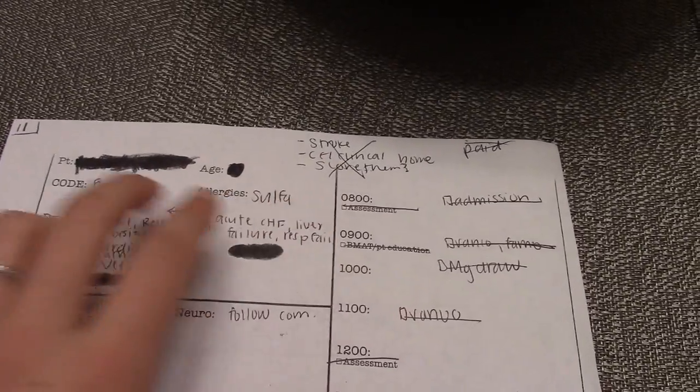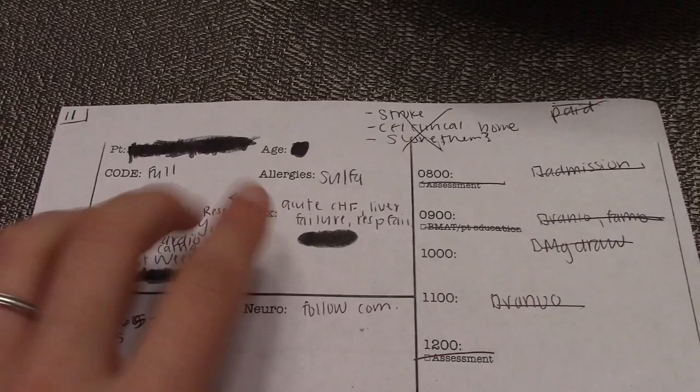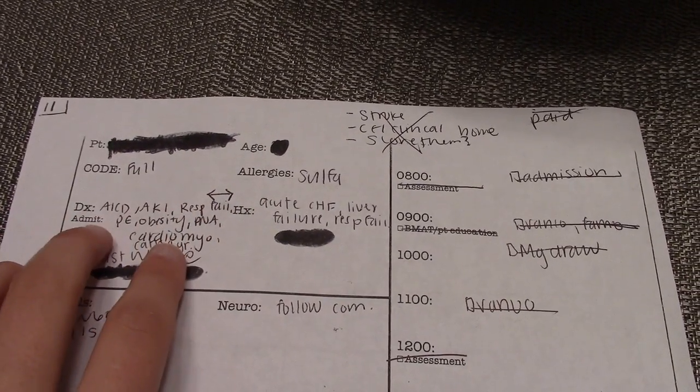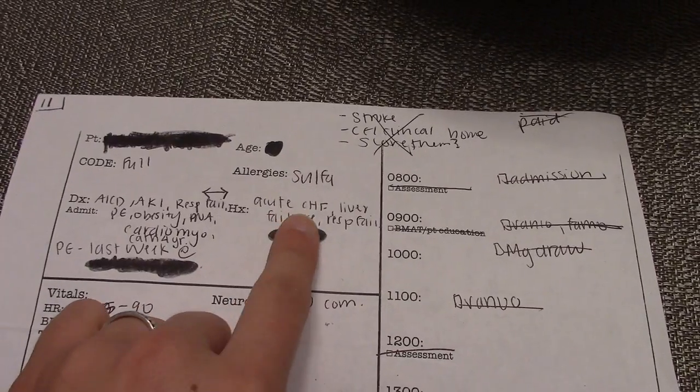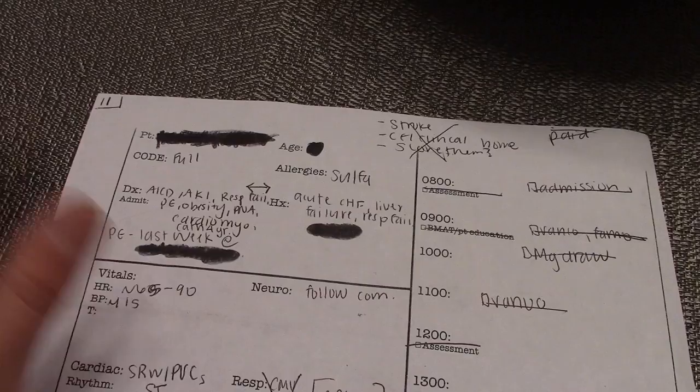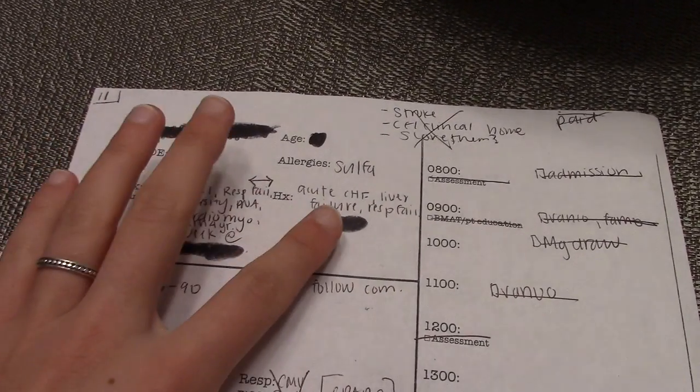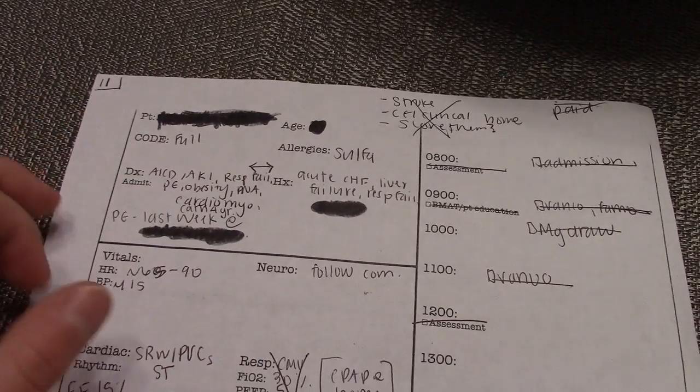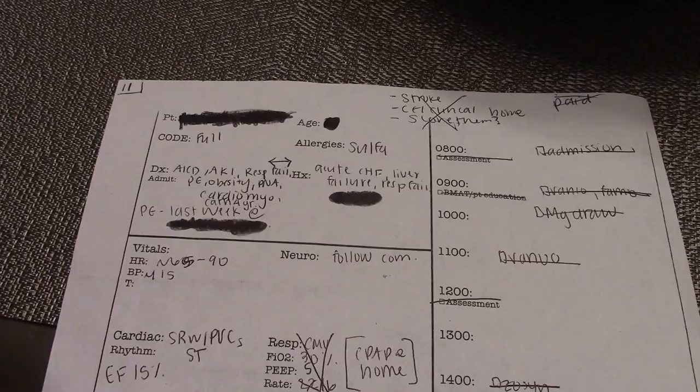At the top I have my patient's name, age, code status, allergies, and then their admitting diagnosis. I accidentally flipped the admitting diagnosis and date around, so I crossed that out. You can see why this patient was here and then their history. I write anything leading up, like if they were brought in by ambulance or anything pertinent.